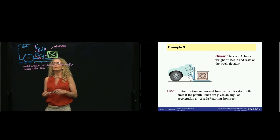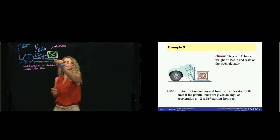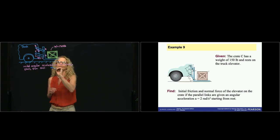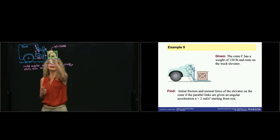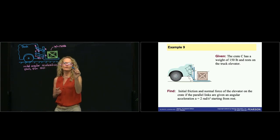And we are asked the initial normal and friction force between the crate and this platform, if the initial angular acceleration of the platform is 2 radians over seconds squared, and it starts from rest.